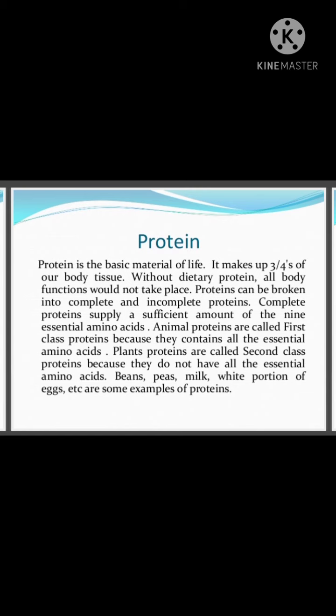The second essential nutrient is protein. Proteins make up about three-fourths of our body tissues and are majorly made up of amino acids. Animal proteins are called first-class proteins because they contain almost all essential amino acids, whereas plant proteins are called second-class proteins because they lack some essential amino acids. Best examples of protein sources include milk, meat, and peanuts.